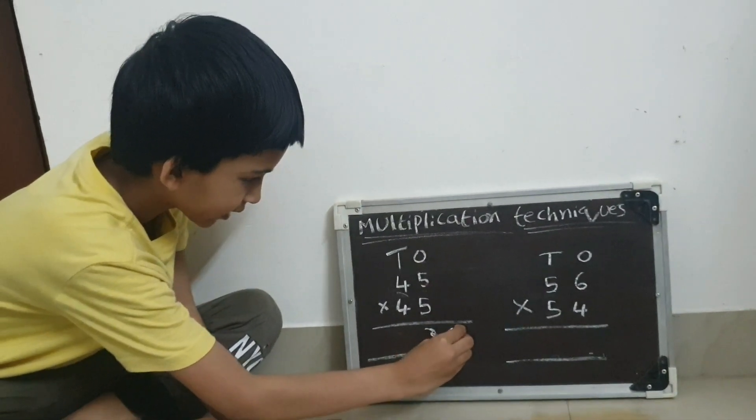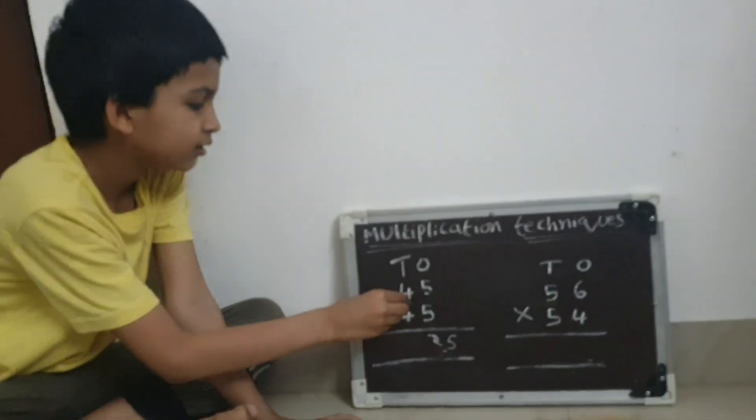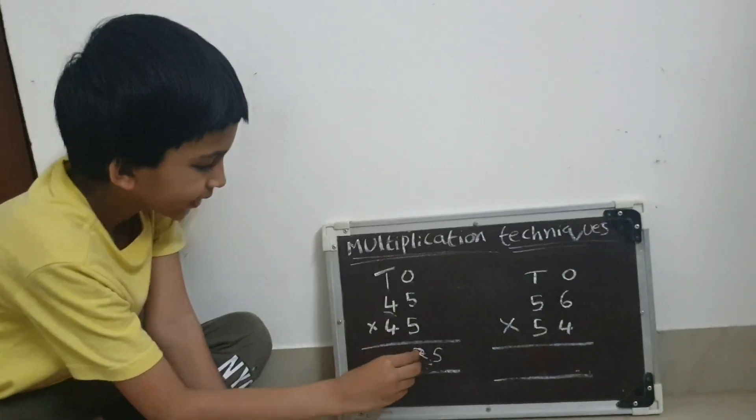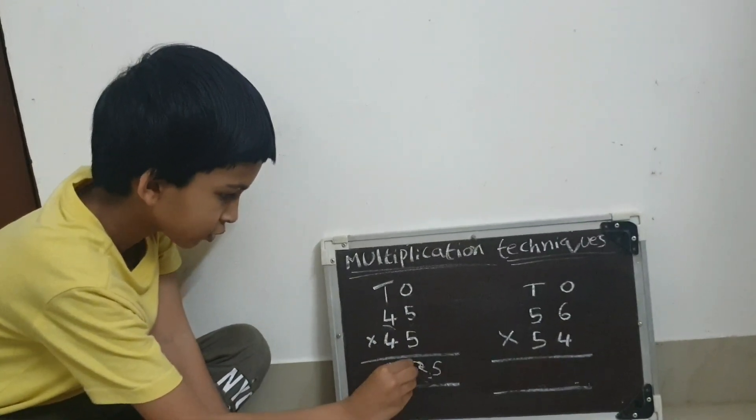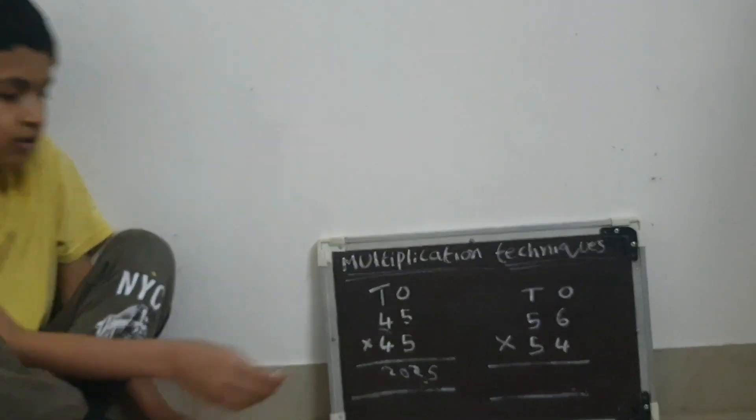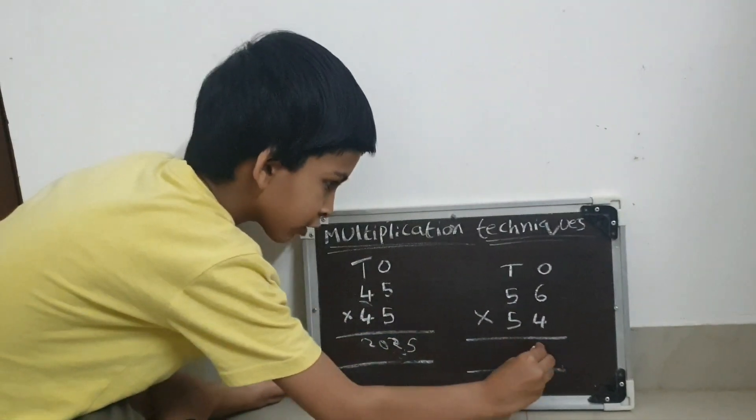Equal to 25, directly write 25 here. Now add 4 plus 1, equal to 5. Now 5 times 5 equal to 20, so the answer is 2025. Now 6 multiplied by 4 is equal to 24.